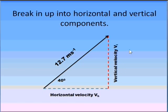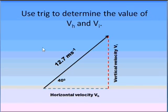When breaking up into components, you can see here that this component represents our horizontal velocity, the blue dashed line, whereas the red dashed line is the vertical velocity. These two velocities added together give us our 12.7 ms. What we want to do is use trig to work out the values of the horizontal velocity and the vertical velocity, v_i.